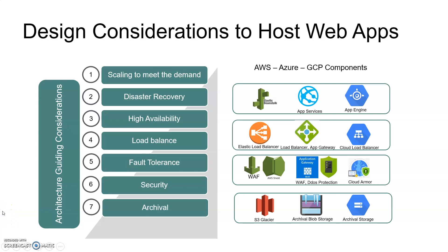I have listed a few components from AWS, Azure, and GCP. The first section is to host your website serverless. Elastic Beanstalk is from AWS, App Services is from Azure, and App Engine is from GCP. These three components will help you host your application with less maintenance.